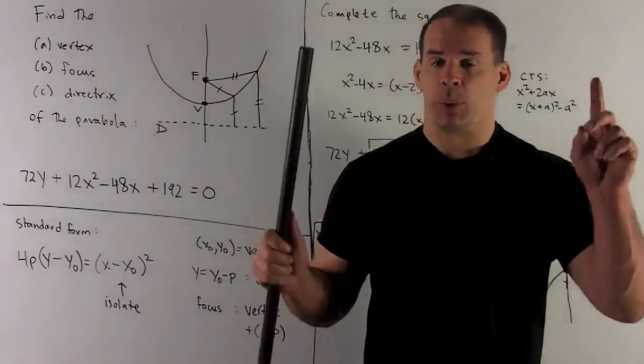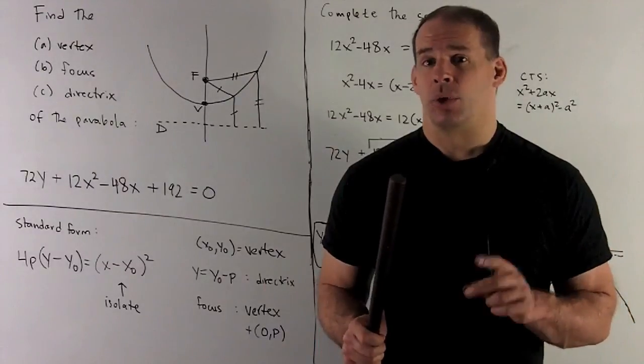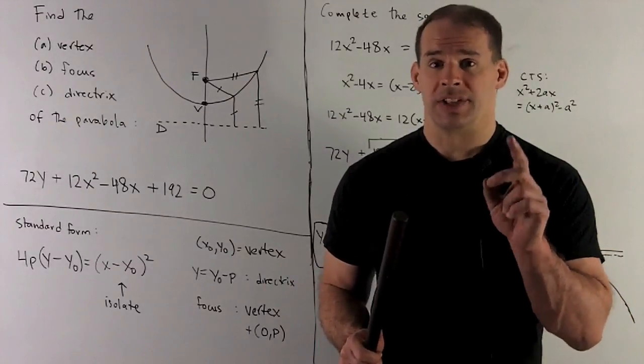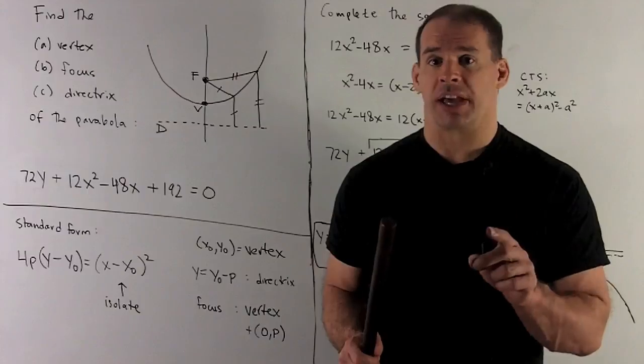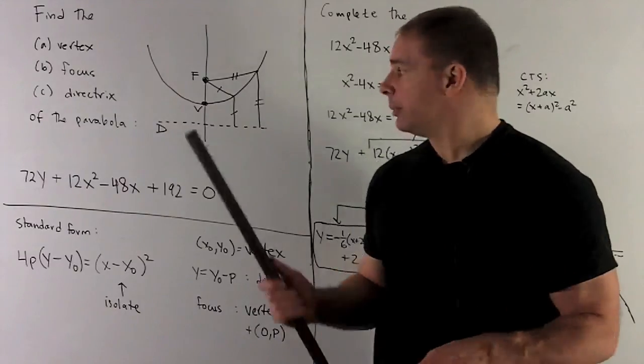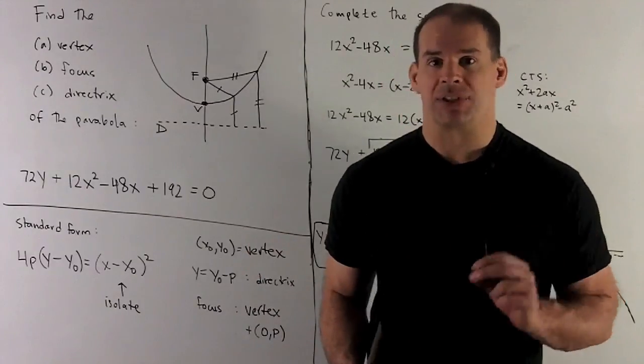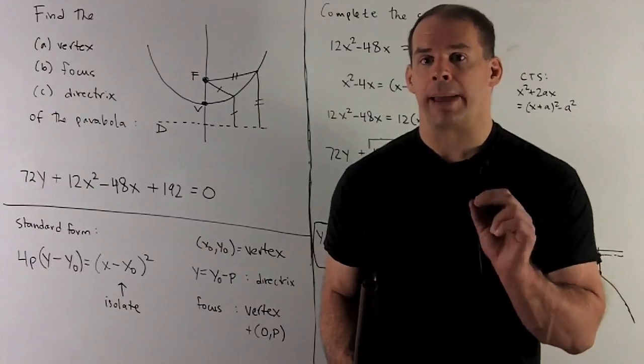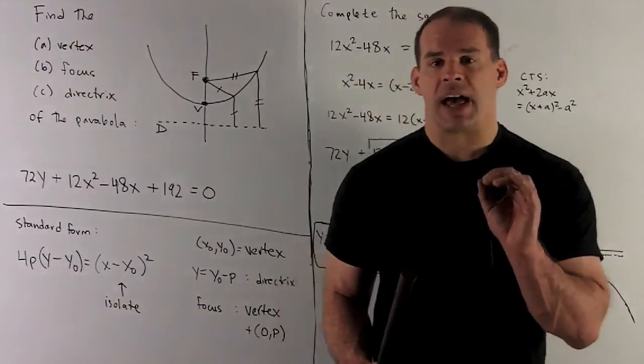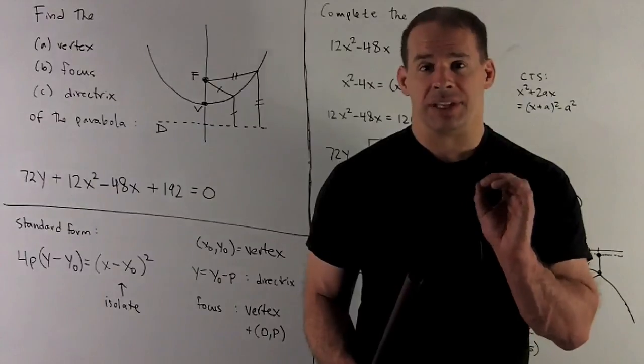Our graph is pointed up. We'll call this number P, distance between focus and our vertex. It's pointing down, we'll call it minus the distance. So, how are we going to solve to get each of these items?